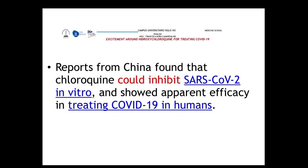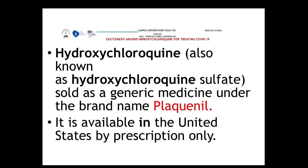Regarding how hydroxychloroquine works, Chinese researchers found that chloroquine could inhibit SARS-CoV in vitro, but no conclusive results were available for humans. Hydroxychloroquine is known as hydroxychloroquine sulfate and is sold under the brand name Plaquenil. It is available in the United States and Mexico only by prescription.